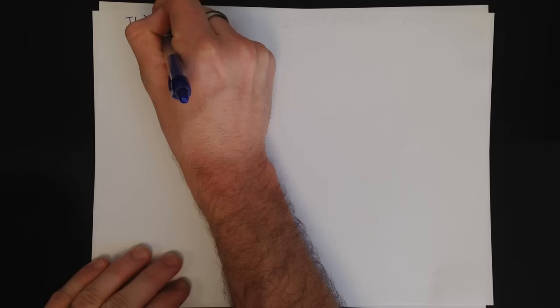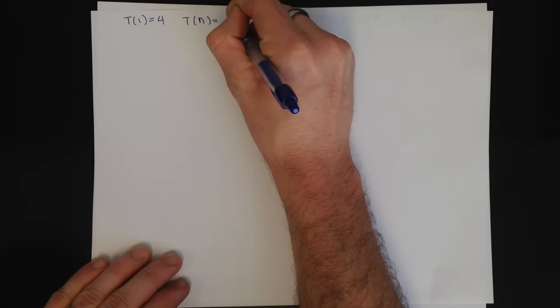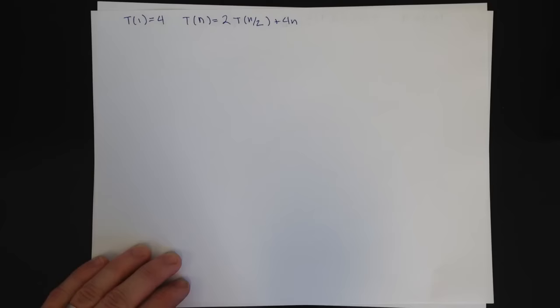So what I'm going to do is work one recurrence, which is T(1) = 4, and T(n) is equal to 2T(n/2) + 4n. And I'm going to work it using both the substitution method and the tree method.